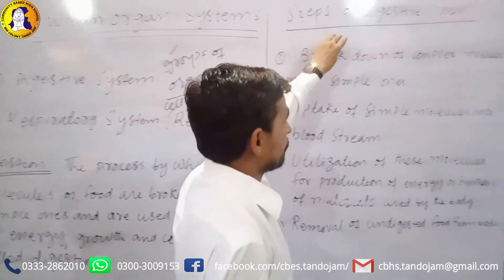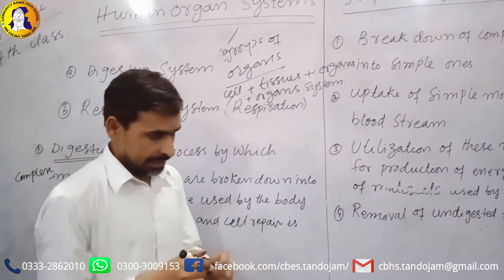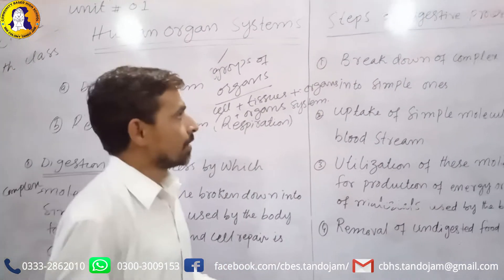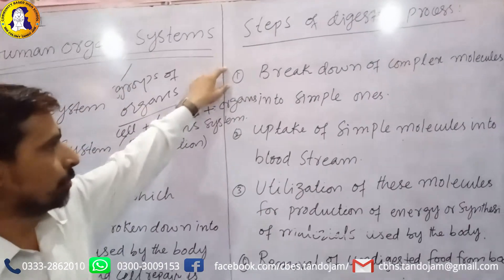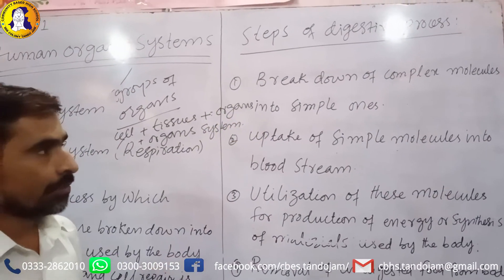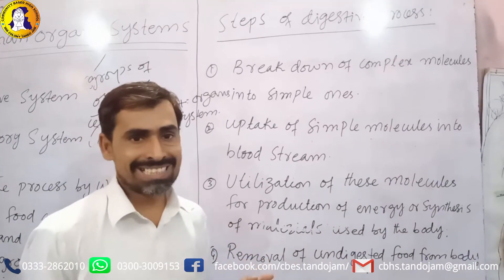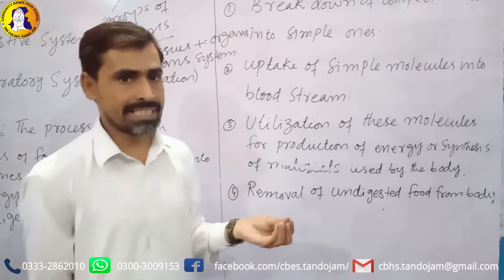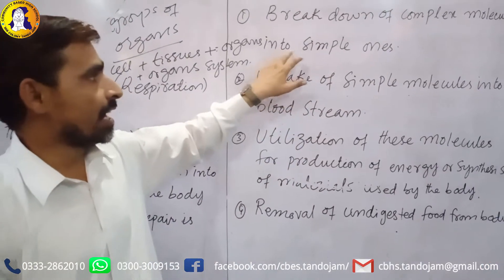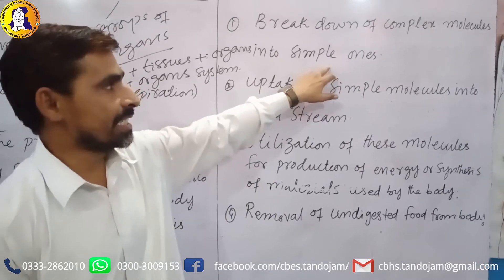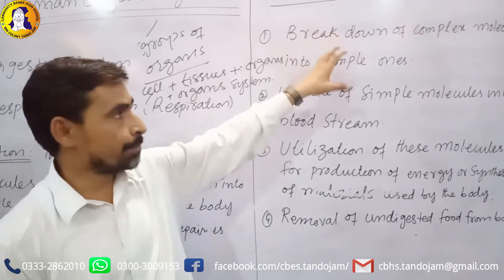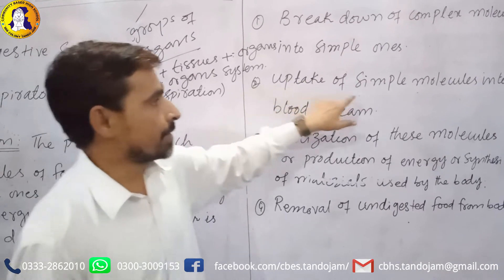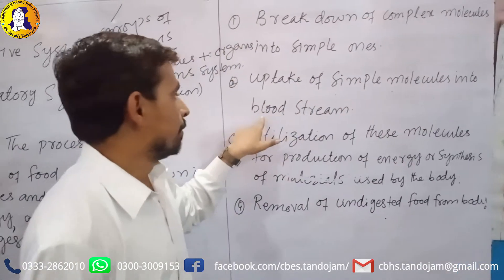Now, the steps of the digestive process: first is the breakdown of complex molecules into simple ones. The complex molecules we eat — carbohydrates, proteins, and fats — are broken down into simple units. The second step is the uptake of these simple molecules into the bloodstream.